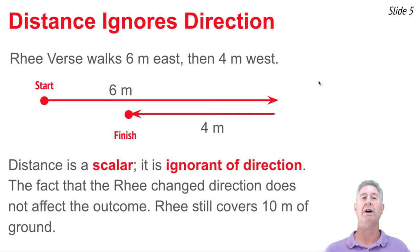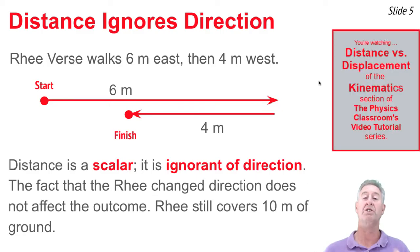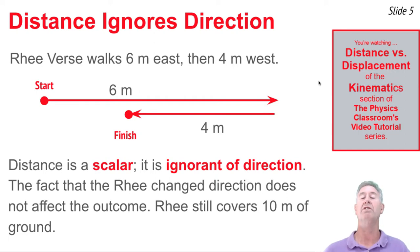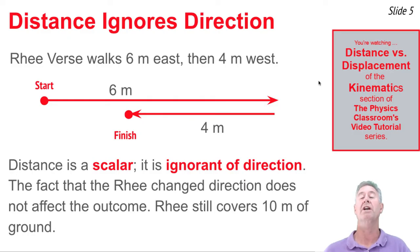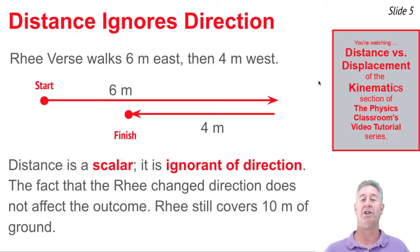When solving this question, we noticed we ignored that direction change that occurred after the first six-meter segment of motion. That's because distance is a scalar — it's ignorant of direction. It didn't matter whether Rhi walks six meters east and then four meters east, or six meters east and four meters west. Distance is ignorant of direction, so a direction change does not affect the outcome of the answer.